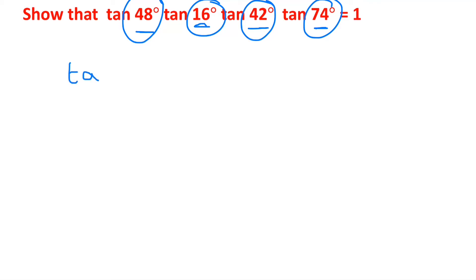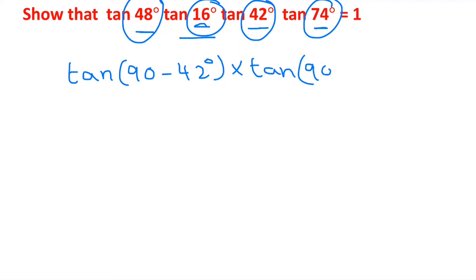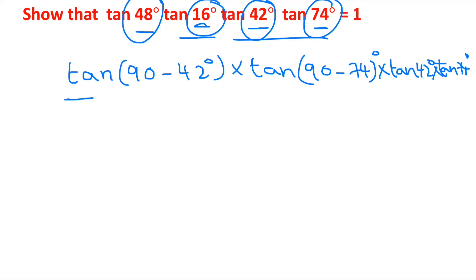For tan(48°), we can write it as tan(90° - 42°). For tan(16°), we can write it as tan(90° - 74°). The remaining two angles stay as tan(42°) and tan(74°). Now, since tan(90° - θ) = cot(θ), we can write tan(90° - 42°) as cot(42°) and tan(90° - 74°) as cot(74°).